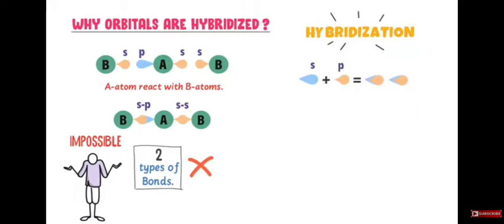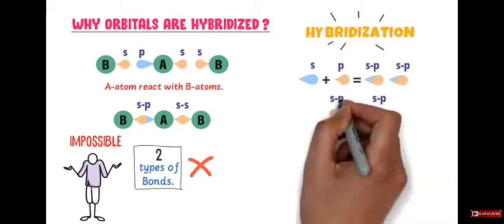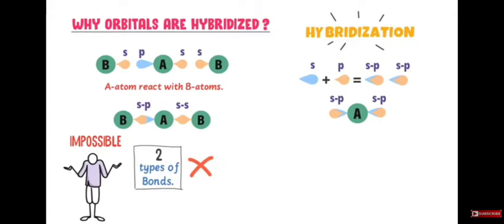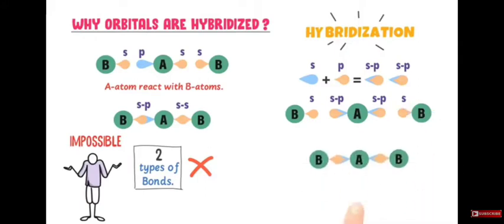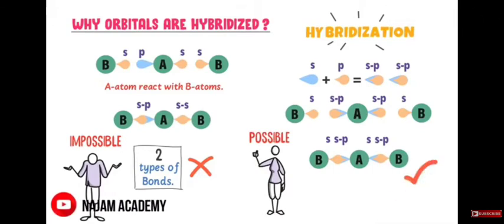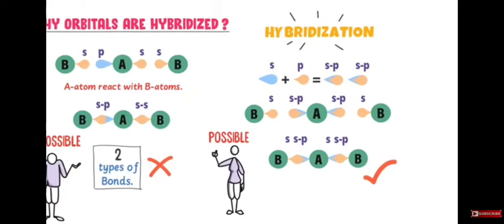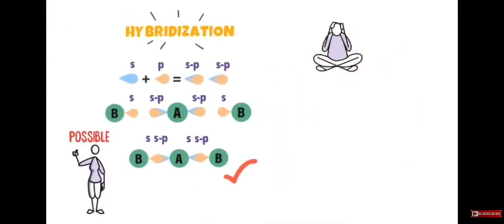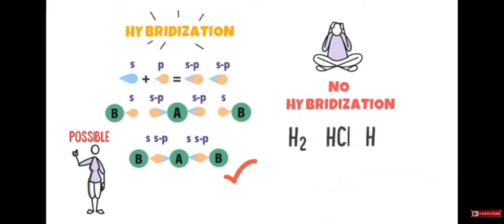To solve this issue, the s orbital and p orbital combine together to form two hybrid orbitals known as sp orbitals. Each sp orbital of atom A will form a covalent bond with the s orbital of atom B, creating an S-SP bond in both cases. Now atom A forms the same type of bond (S-SP) with atom B, which is possible, understandable, and 100% correct. Note that hybridization does not occur in every molecule — for example, it does not occur in H₂, HCl, or H₂S.